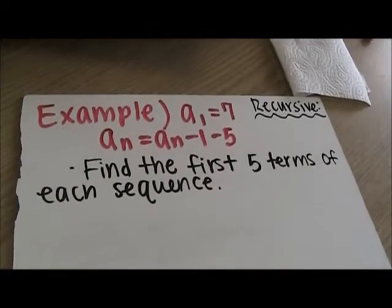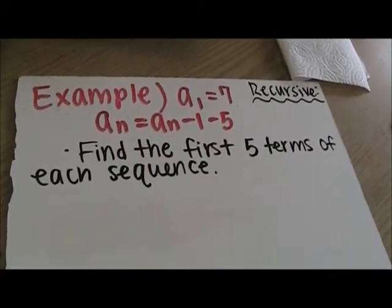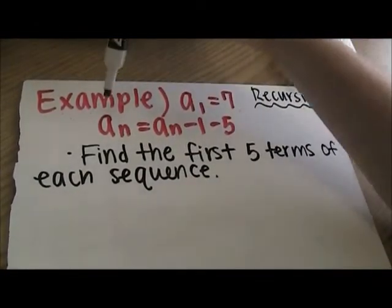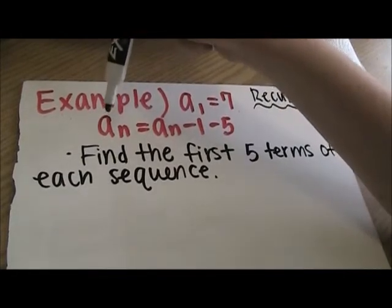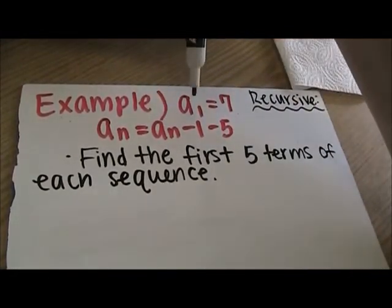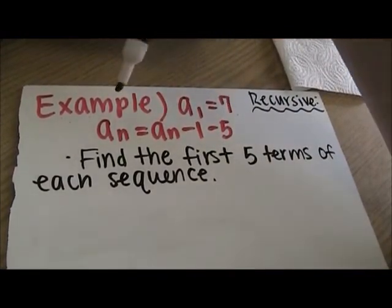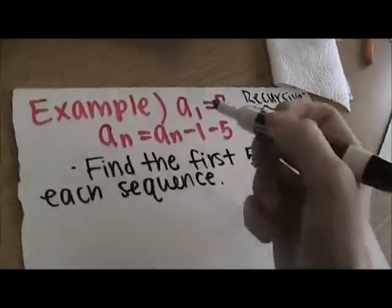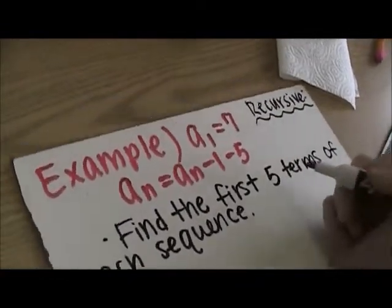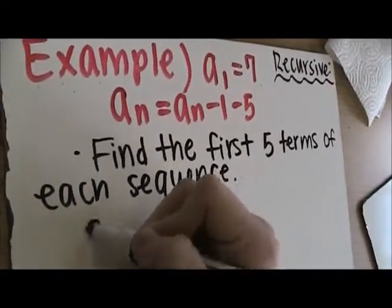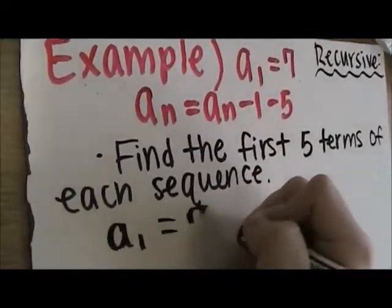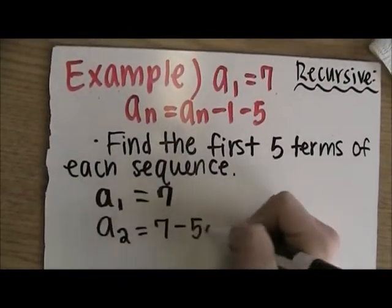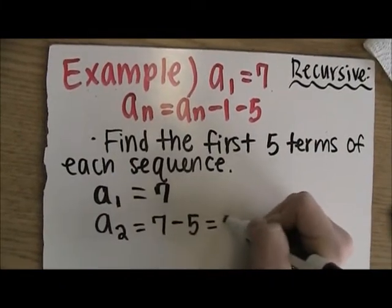For the example, given a1 equals 7, the problem is: a sub n equals a sub n minus 1 minus 5. First, we have to find the first five terms of each sequence. So we know the first term, which is 7 — a1 equals 7. To find a2, you have to do 7 minus 5, which equals 2.